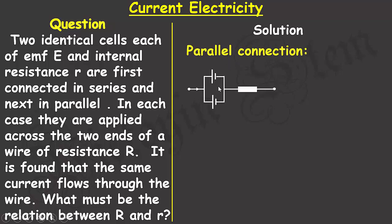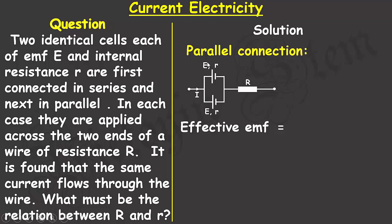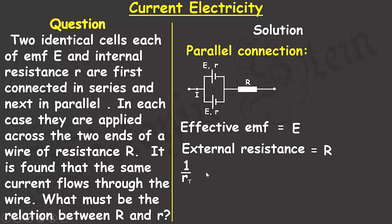Now when the cells are connected in parallel, it will look like what you can see on the screen. The EMF E and the internal resistance small r apply to the first cell, and the same applies to the second cell. The current through the circuit is I and the resistance of the wire is R. The effective EMF when cells are connected in parallel is that of just one cell, which is E. The external resistance of the wire is capital R.